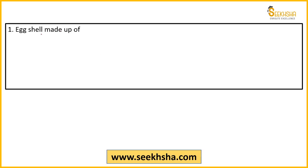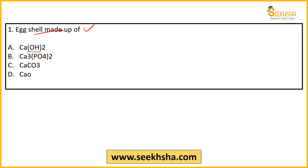Let's come to the first question. Eggshell — what is eggshell made up of? Options: A) Ca(OH)2, B) Ca3(PO4)2, C) CaCO3, D) CaO, E) None of the above.